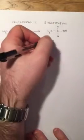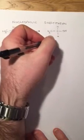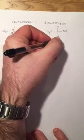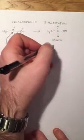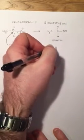Now we can draw out our product, which in this case is ethanol, and the other product from this reaction is a bromide ion.